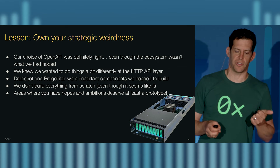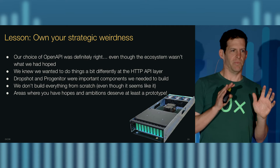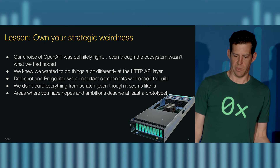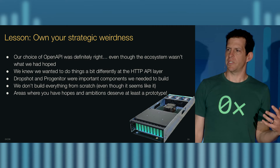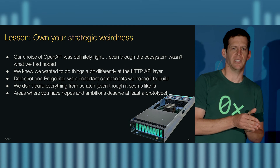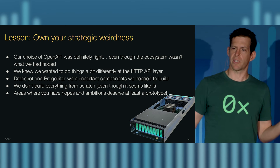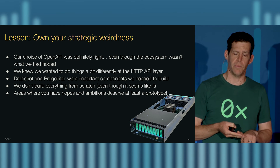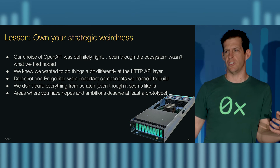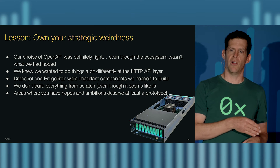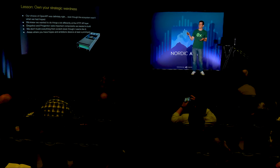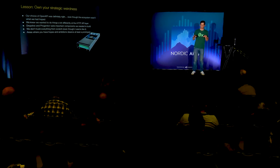The last lesson: own your strategic weirdness. OpenAPI was the right choice — everyone seems to be using it for good and ill, even though the ecosystem wasn't what we had hoped. We knew we were doing something a little different — using OpenAPI as output, constructing the rest of the world around it, having services talk together in a specific way. Even if we had gotten an OpenAPI generator working exactly as we hoped, owning Progenitor and that generation tooling turned out to be incredibly important for lots of other things we're doing. As you're considering tooling, knowing that this is weirdness you want to embrace and invest in — owning that tooling rather than adapting some other project is a great way to take that on.